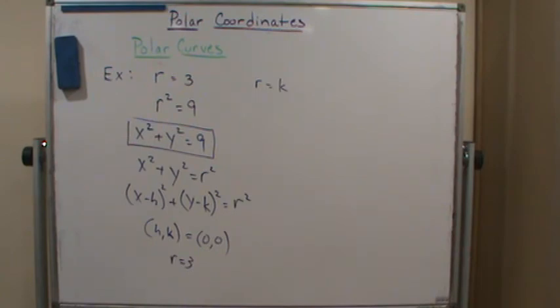Now, however, in this case we do not introduce new points. For example, negative 3 comma pi over 3 is the same point as 3 comma 4 pi over 3.